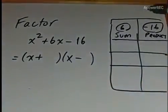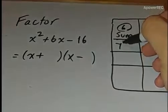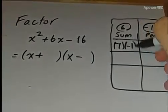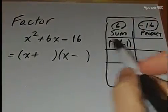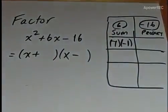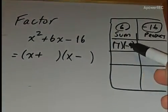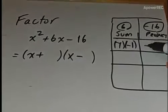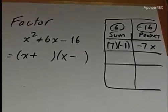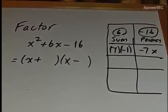So let's try 7 and negative 1. If I have 7 plus negative 1, or 7 minus 1, it gives me positive 6. That's okay, but what happens when you have 7 times negative 1? You get negative 7. But that's not the product we want. We want negative 16.